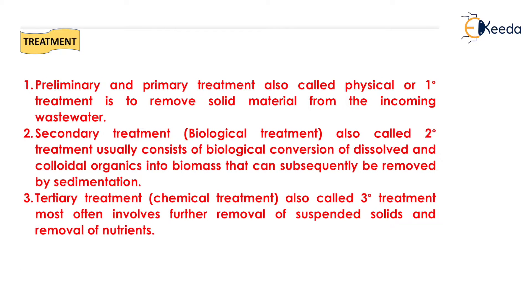There will be three types of treatment. The first is preliminary or primary treatment, also called physical or one-degree treatment, which is used to remove solid material from the incoming wastewater. Primary treatment is only done to remove solid material such as grit, stones, and pebbles from the wastewater.